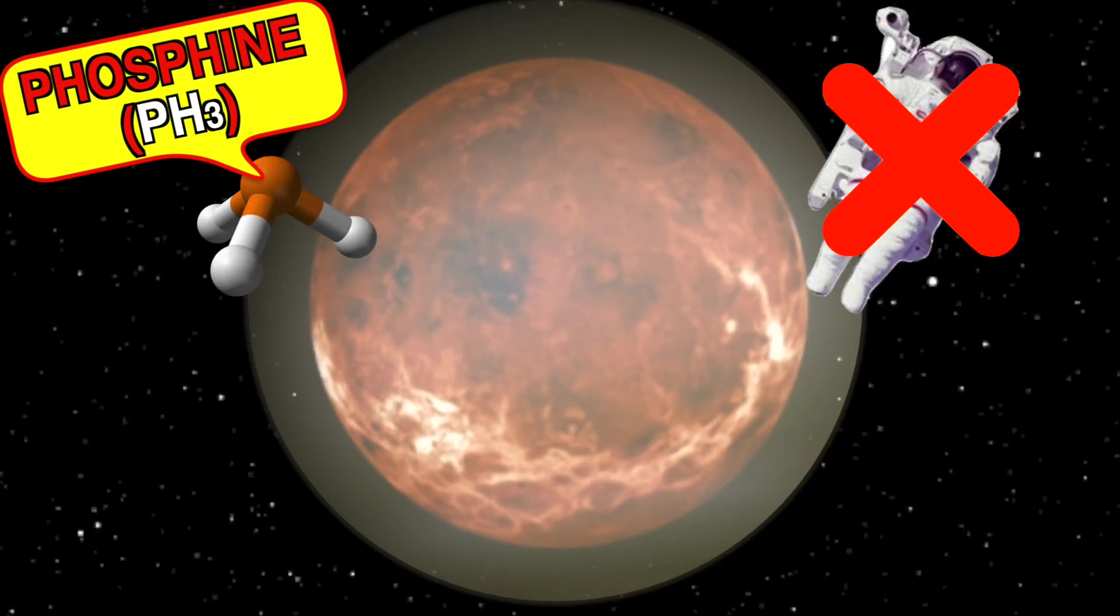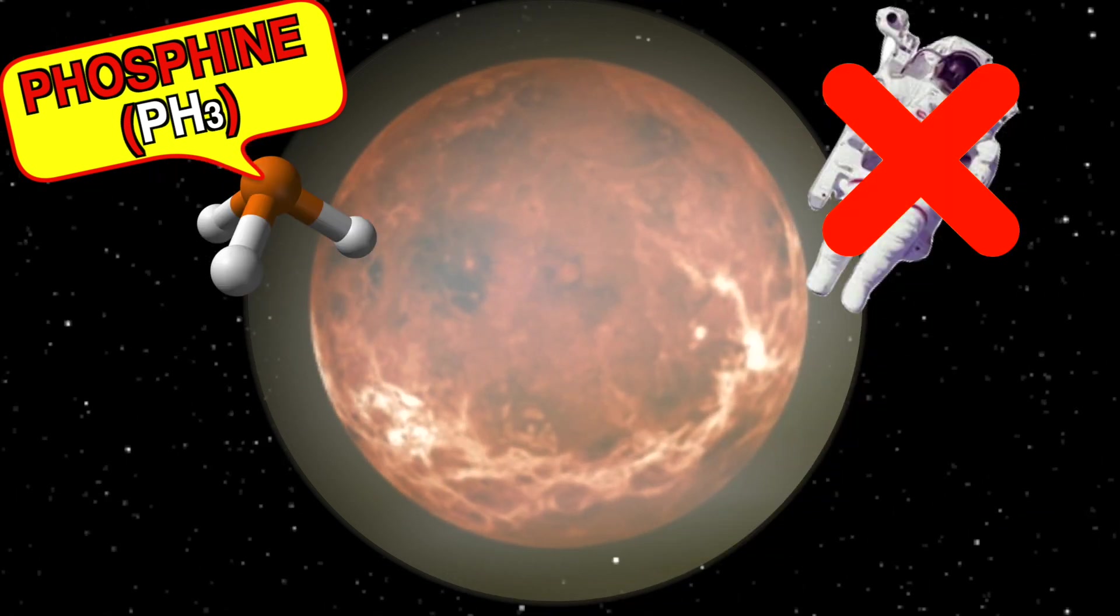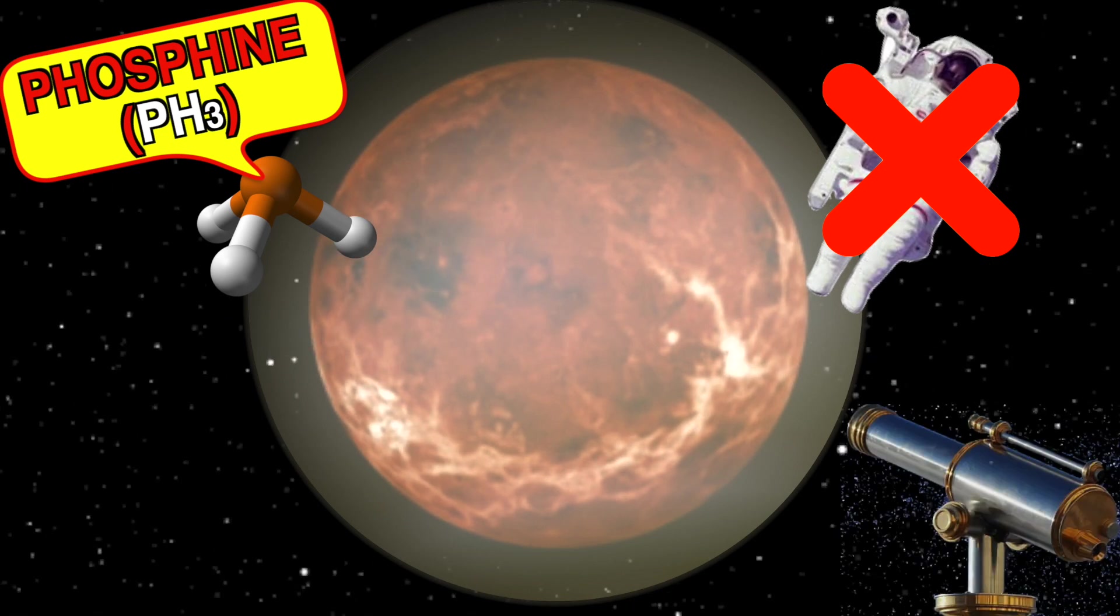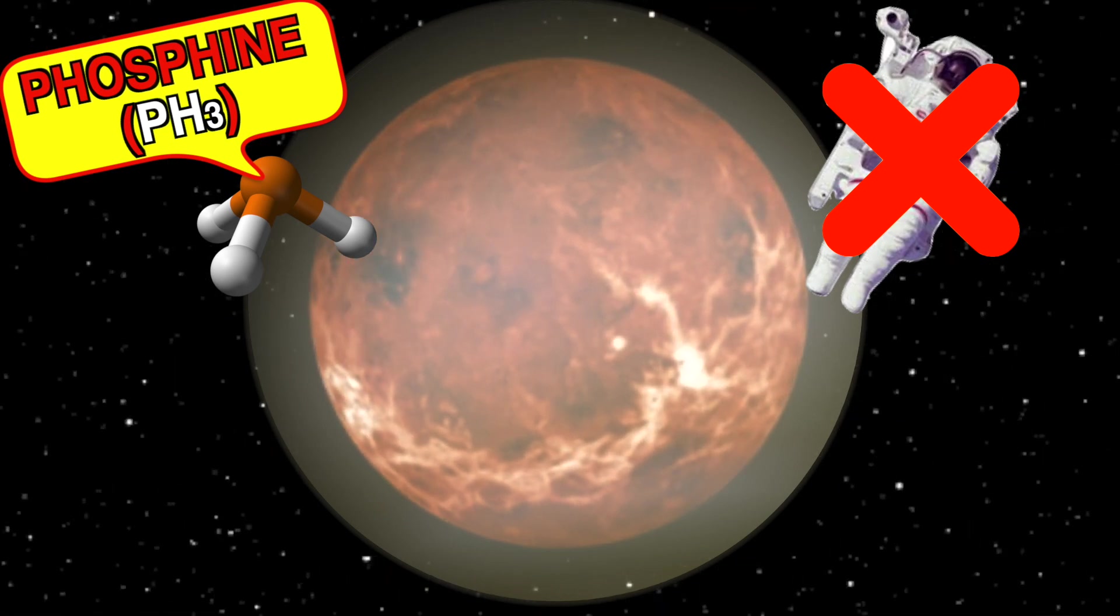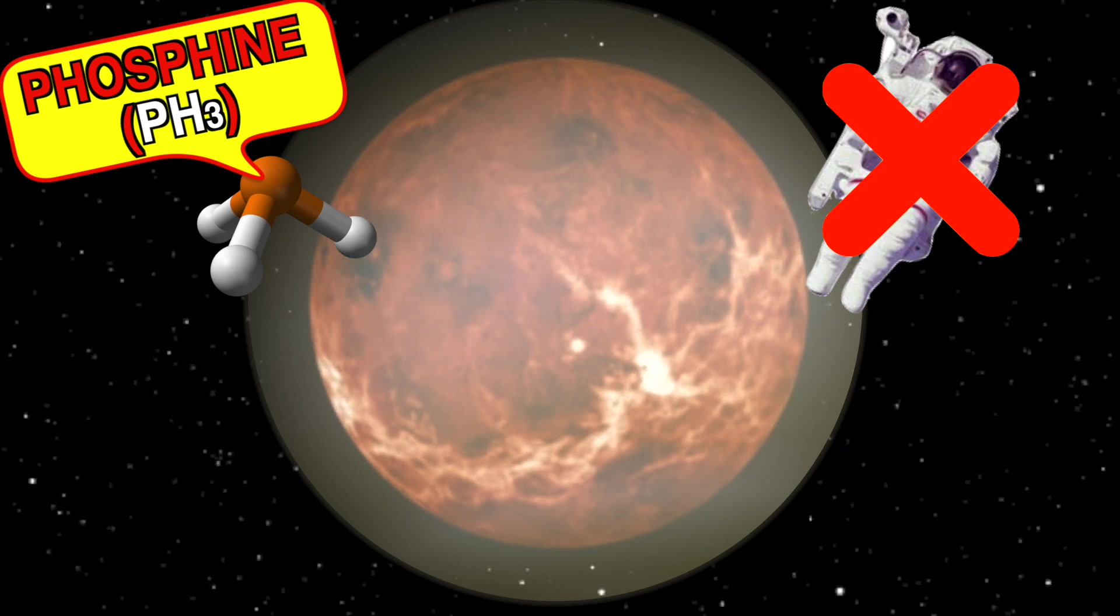We didn't go to Venus to find the gas. We actually just directed our telescopes. We captured the light coming from the clouds of Venus and we were able to find this gas phosphine in the clouds of Venus.